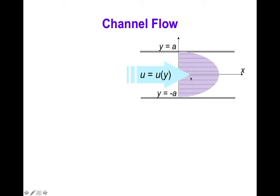This is referred to as channel flow. The plates are aligned parallel in the x-direction, so the flow velocity u in the x-direction should vary only as a function of y, and we have boundaries at y equals plus and minus a.